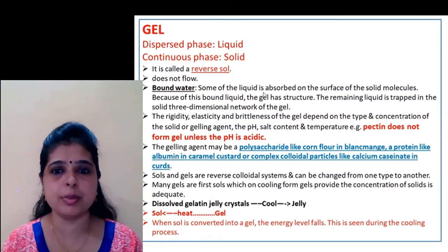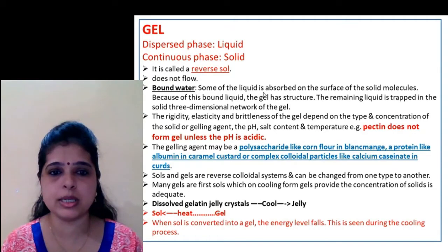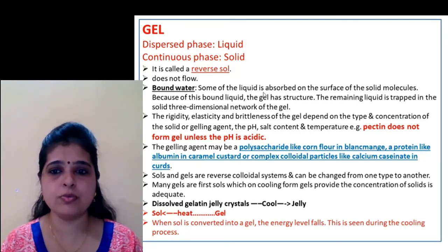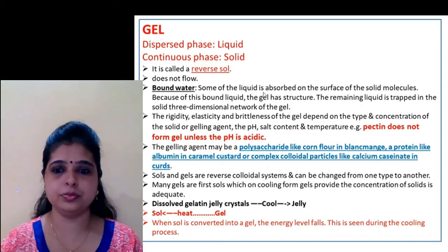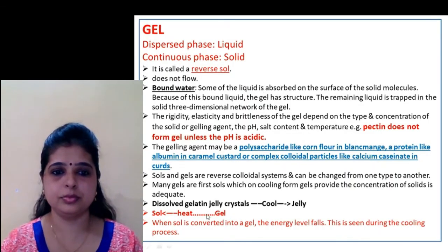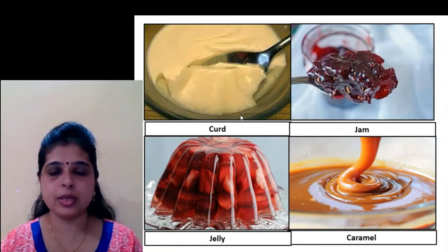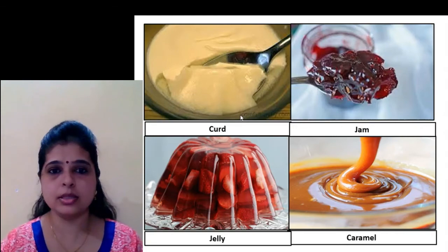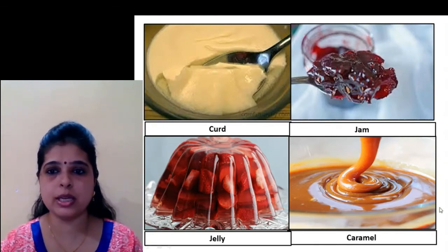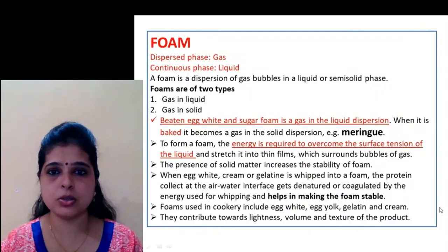The gelling agent may be polysaccharide or protein. Sol and gels are reverse colloidal systems and can be changed from one type to another. Examples of gel colloidal system include curd, jam, jelly, caramel, and custard — these are all gel colloidal systems.